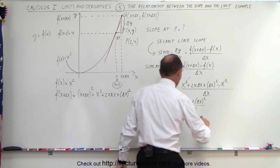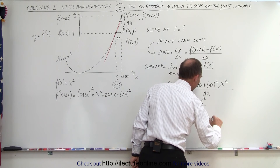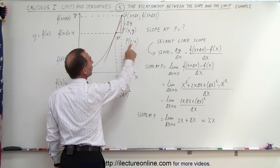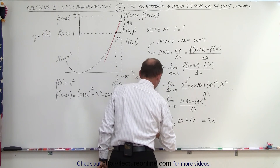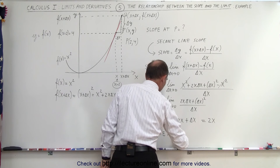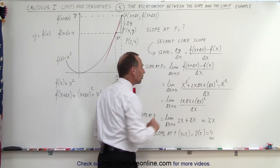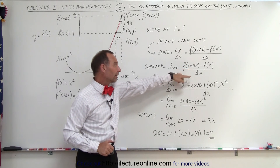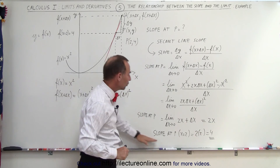Now taking the limit — letting delta x go to 0 — the delta x term becomes 0, leaving us with 2x. The slope at P equals 2x. The x value of P was equal to 2, so plugging that in, the slope at P where x equals 2 is equal to 2 times 2, which is 4. By going through this calculation — finding the limit as delta x goes to 0 of f of x plus delta x minus f of x divided by delta x, and evaluating at x equals 2 — we know the exact slope at that point.